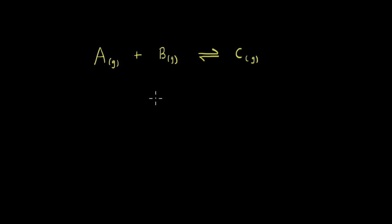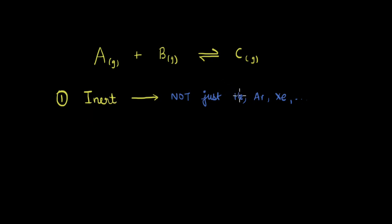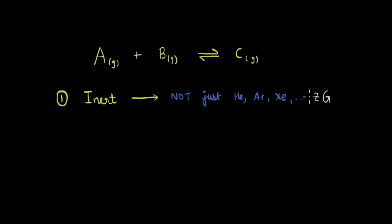Before we begin, there are two things to note. First, when we say inert gas, we are not just referring to gases like helium, argon, and other noble gases. The word inert here implies that the gas introduced is not reacting with any of these gases. So if we have some Z moles of a gas G such that this gas does not react with any of these gases, we can say that this gas is inert for this reaction. So it could be noble gases, but it can also be some other gas which is not reacting with A, B, and C.